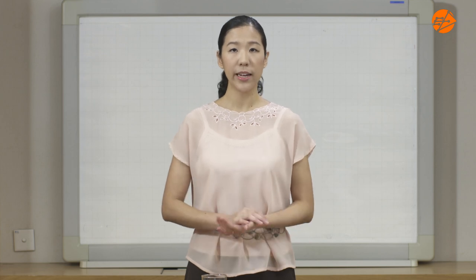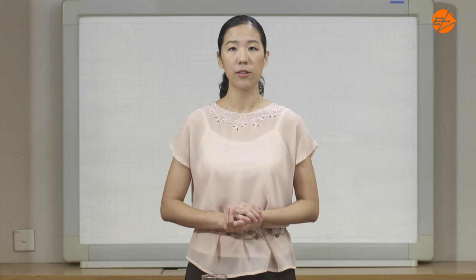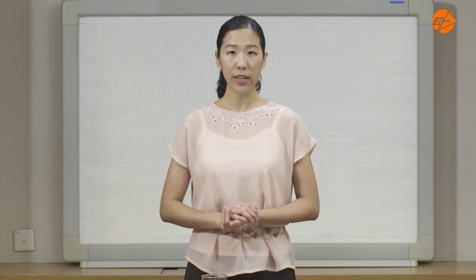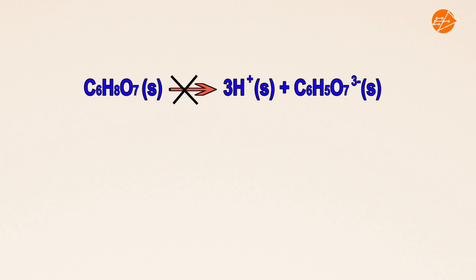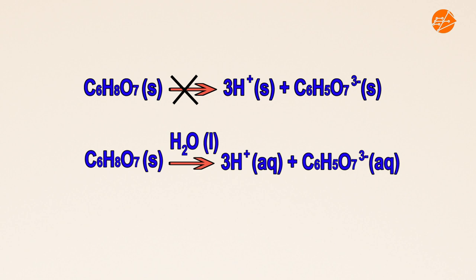We have learnt that acids dissociate in water to produce hydrogen ions, and the characteristic reactions of acids are due to the hydrogen ions. In the solid state, citric acid does not have hydrogen ions, hence we need to add the citric acid to water so that it dissociates to produce hydrogen ions and a reaction occurs.